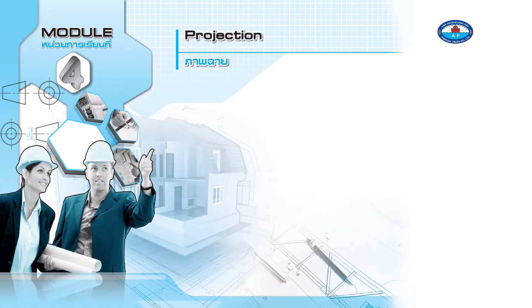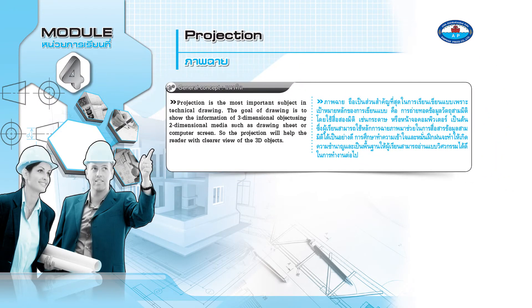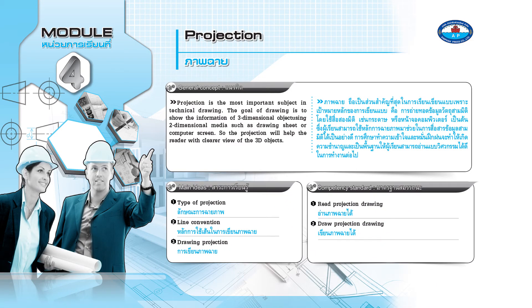Module 4: Projection. General Concept. Projection is the most important subject in technical drawing. The goal of drawing is to show the information of a three-dimensional object using two-dimensional media, such as a drawing sheet or computer screen, so the projection will help the reader with a clearer view of the 3D objects.